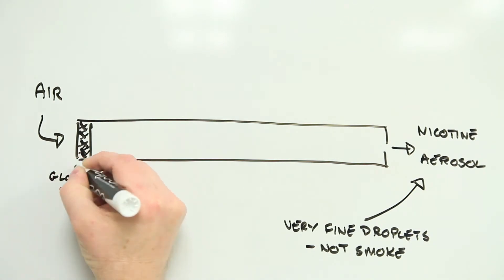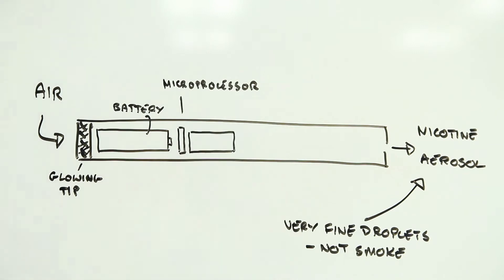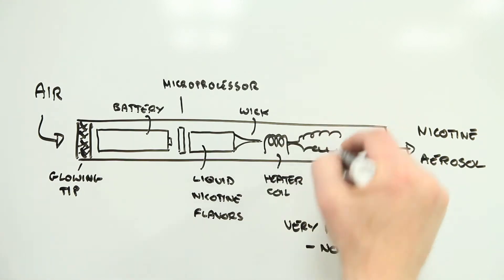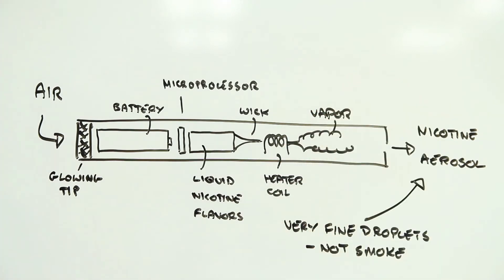E-cigarettes use a liquid such as glycerin into which ingredients like nicotine and even flavorings are dissolved. When you take a puff, this liquid is vaporized in a hot wire and forms a cloud of fine particles that, when inhaled, penetrate deep into your lungs.